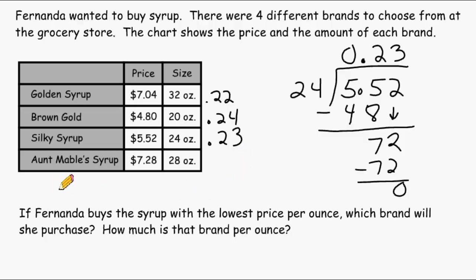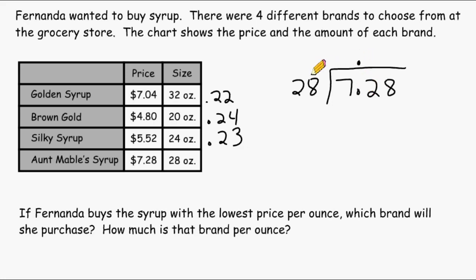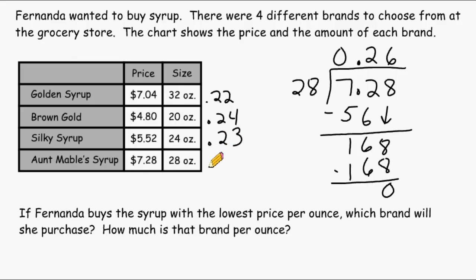We have one more brand to find the unit price for, and that is Aunt Maple Syrup. To find the unit price we take 7.28 and divide that by 28 ounces. We raise the decimal up — 28 cannot be divided into 7, but 28 goes into 72 twice: 2 times 28 is 56, and when we subtract that gives us a difference of 16. We drop the 8 down and divide 28 into 168 — 28 goes into 168 a total of 6 times, and 6 times 28 is exactly 168 with no remainder. So Aunt Maple Syrup is 26 cents per ounce.